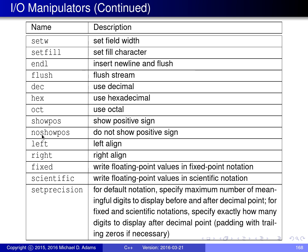showpos and noshowpos control whether positive signs are printed in front of numbers. left and right control how data is justified within the printed field — whether it's left-justified or right-justified when the data is smaller than the field width. fixed and scientific control whether numbers are printed in fixed-point notation or scientific notation. setprecision controls the precision of numbers — for floating-point numbers, it controls how many digits come after the decimal point.